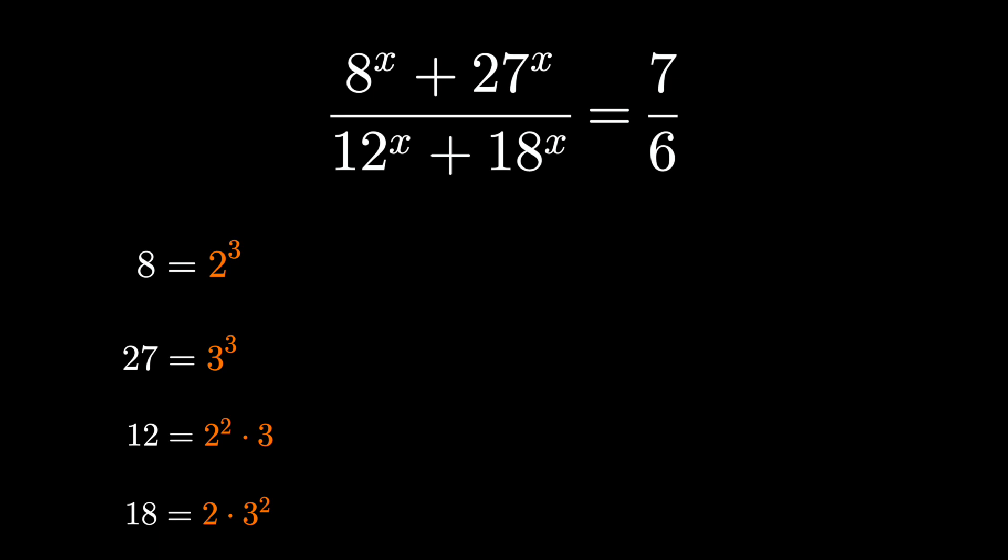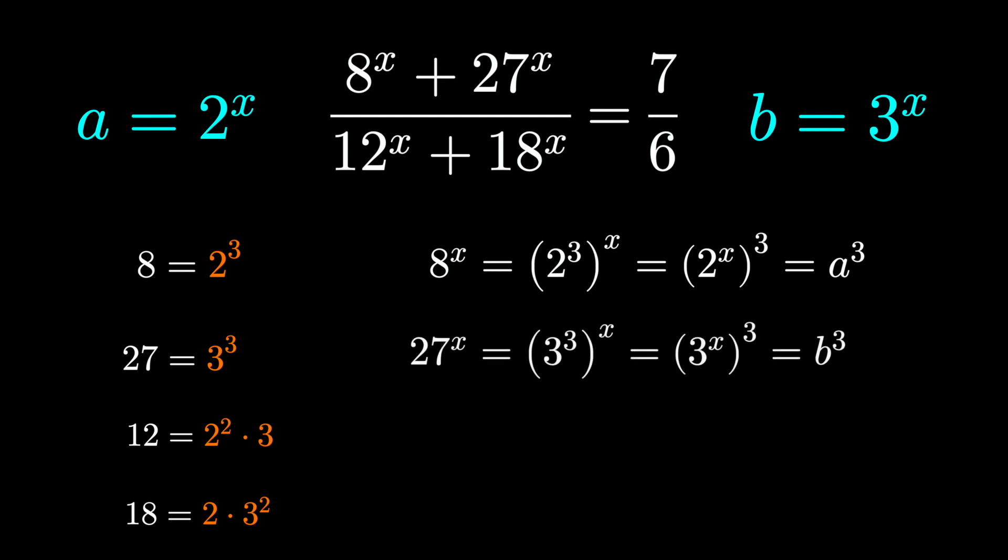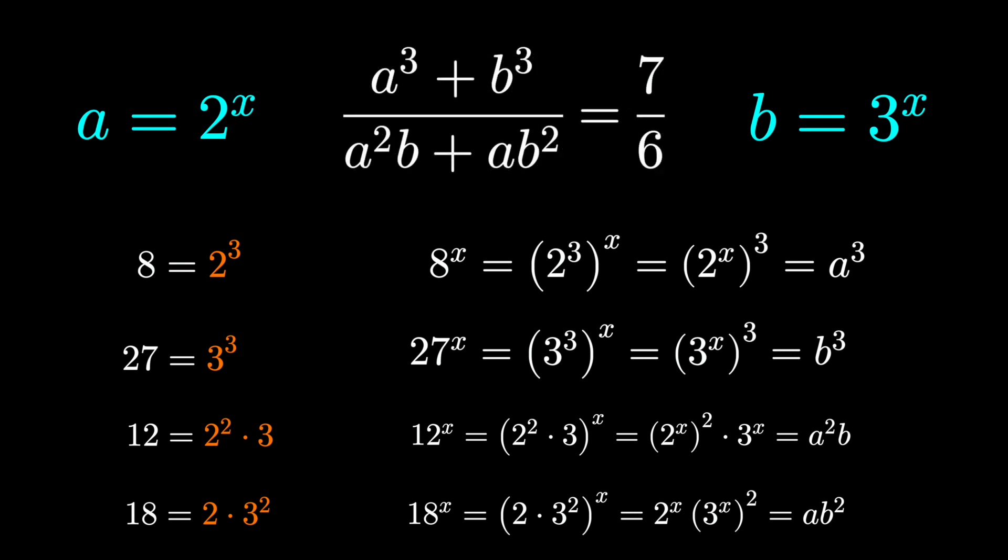So a really nice substitution is to say a equals 2 to the x, and b equals 3 to the x. If we do that, that means 8 to the x equals a cubed, 27 to the x is b cubed, 12 to the x is a squared b, and 18 to the x is ab squared. And now we have a much nicer situation to deal with.